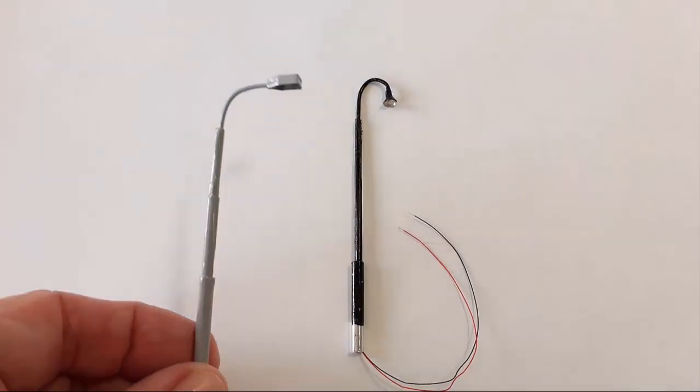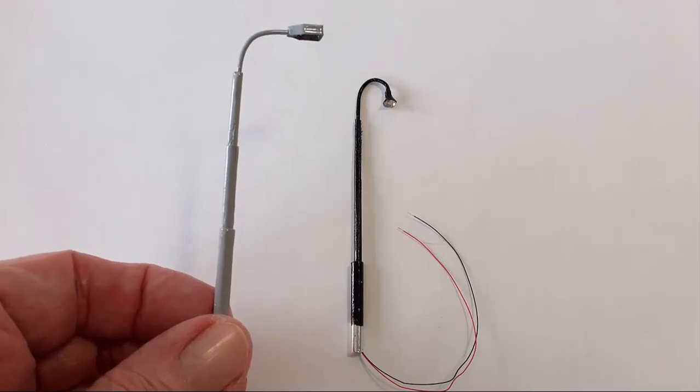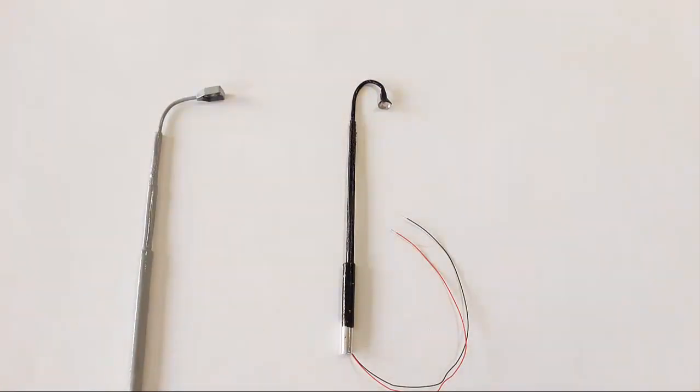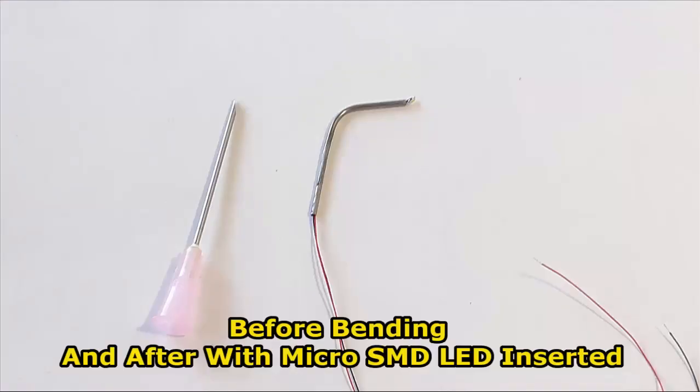This technique can be used also to bend brass tube or wire. The steel used in surgical needles makes them very hard to bend without causing kinks in the bend.